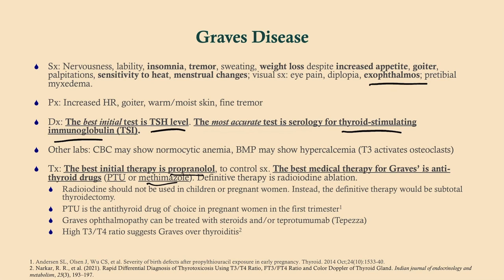The definitive therapy is radioiodine ablation. Radioiodine should not be used in children or pregnant women. Instead, you would do a subtotal thyroidectomy or just treat it symptomatically until you can do something else. PTU is the antithyroid drug of choice in pregnant women in the first trimester. Methimazole is teratogenic, as we'll go into. Graves' ophthalmopathy may not respond to antithyroid treatment — you may give steroids, or there's a newer drug approved in 2020 called Tepeza (generic: teperitumumab), though that's probably not going to come up on a test question.